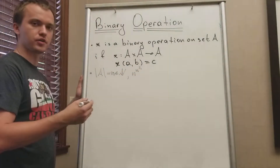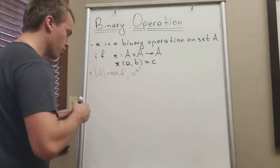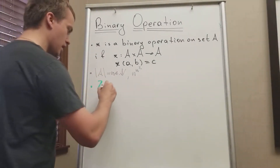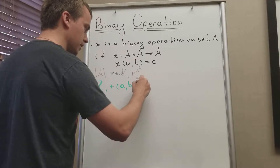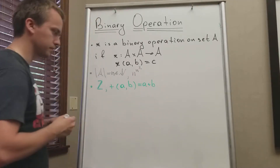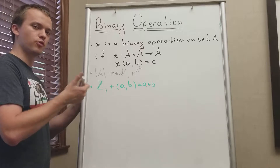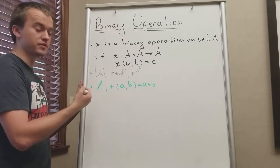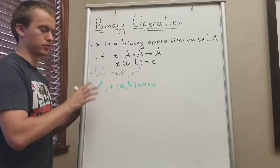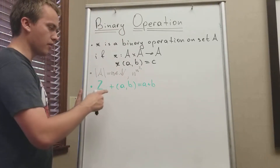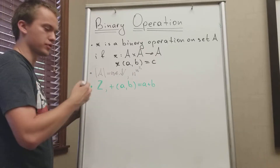There are n to the n-squared different binary operations for such a set. As an example, I'll use the set of integers Z with the binary operation plus, defined as the operation of A and B equals A plus B. Z is infinite, but you can check all my proofs for modular arithmetic examples — it's going to be the same. I want to think about what kind of properties this binary operation has.